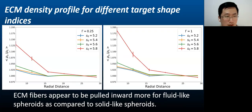Then we show the ECM density profile for different target shape indices. Again, we see for high values of S naught for fluid-like spheroids, the ECM appear to be pulled inward more compared to the solid-like spheroids, which is consistent with previous plot.